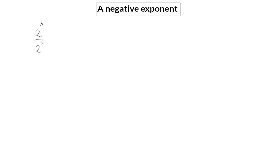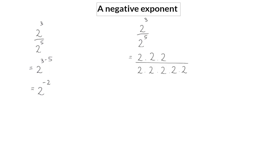Next, we'll have a look at what a negative exponent implies. If I want to simplify this expression using the division law, I will keep the base the same and subtract the two exponents, giving me two to the power of minus two. If I instead expand the exponential form, I can simplify by dividing the top and bottom by two repeatedly, leaving one in the numerator and two squared in the denominator. So a negative exponent in the numerator is the same as a positive exponent in the denominator.